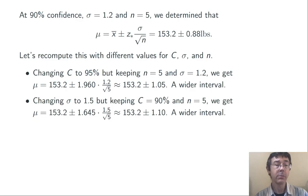Putting C back to 90%, but this time increasing σ to 1.5, and of course leaving n at 5, we again get a wider interval. This time the margin of error is 1.1 pounds.